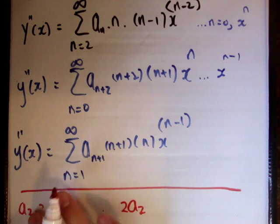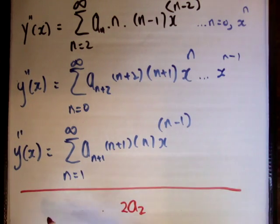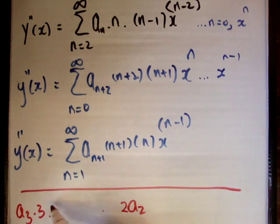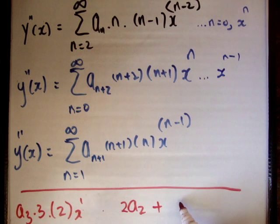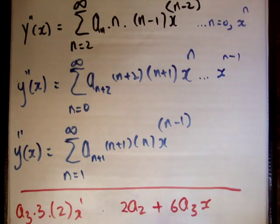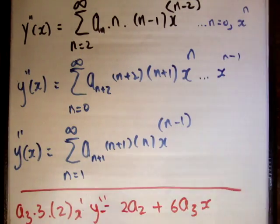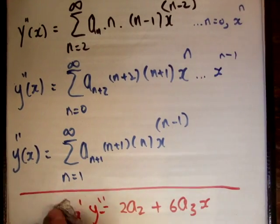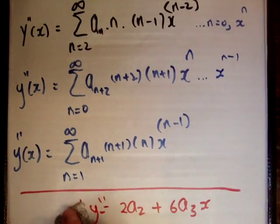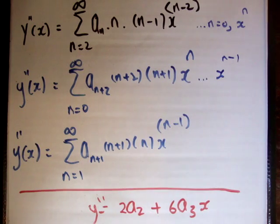That's the first term in the power series. And let's go for the second term. So n is equal to 3. So it becomes a3, times 3, times 2, times x to the 1. So it becomes 6a3x. That is y double prime for this equation here.